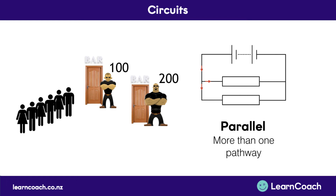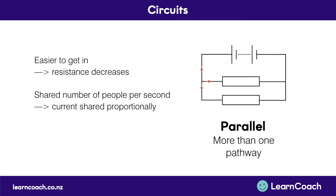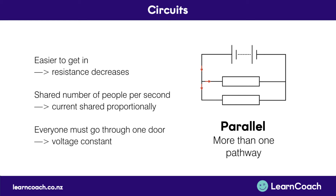Now if we look at parallel circuits, it's like saying there are two doorways, so the line of people must go through one door to get into the club. It's easier to get in, which means the resistance has decreased because there are two doors and two pathways — two options for the electrons to flow. The number of people going through the door per second is shared between both doors, so the current is shared proportionally. Obviously, if one door is bigger it can fit more people — so if the resistance is higher in one component, it's going to have more current going through it. And everyone must go through one door, so the voltage is constant.